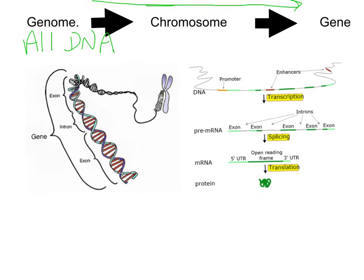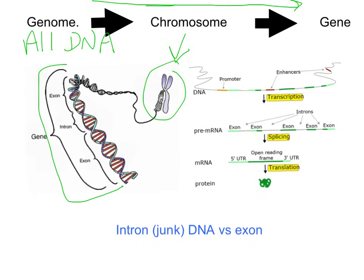A chromosome is shown here in this picture. A gene is a portion of the chromosome — we've pulled out a gene here. A gene codes for one particular protein. That's the job of DNA: to code for proteins. Genes are these small sections of DNA coding for one particular protein.